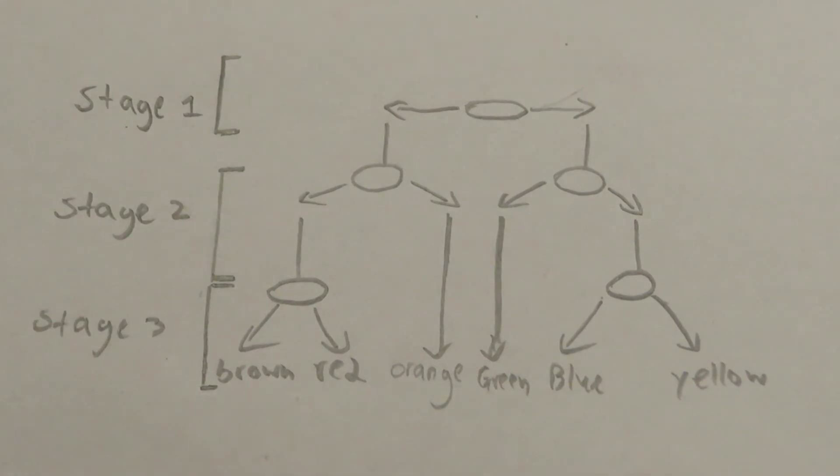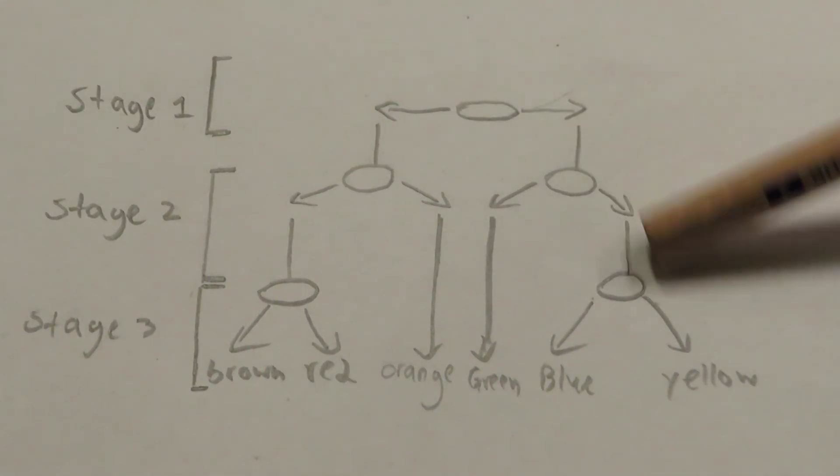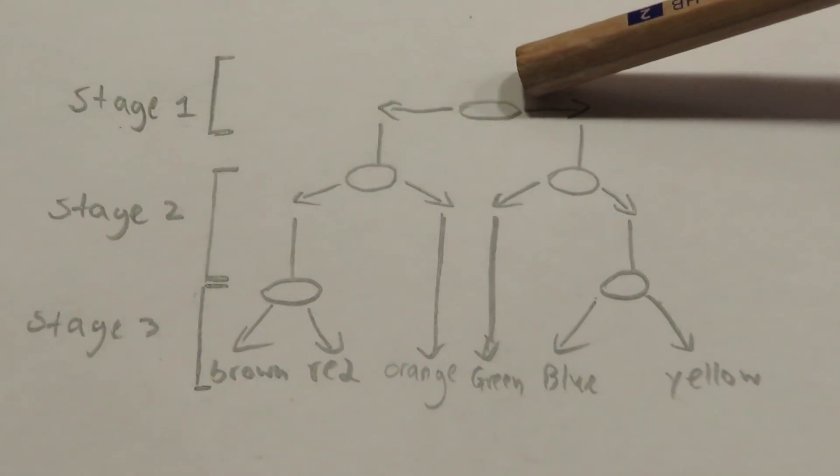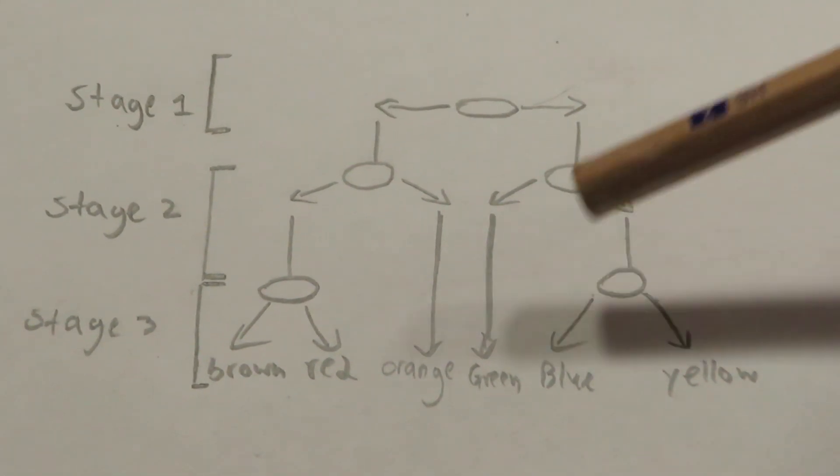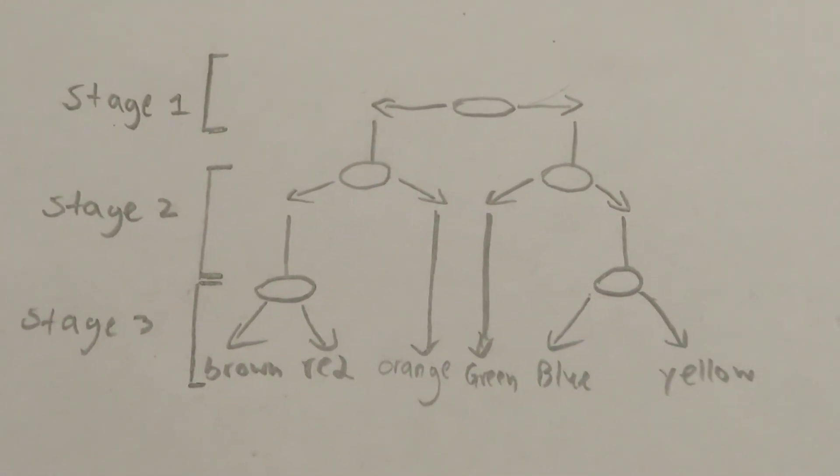For example, if the color of the M&M is yellow, all stages will move to the right. If the M&M is blue, the first and second stage will move to the right, but the third stage will move to the left.